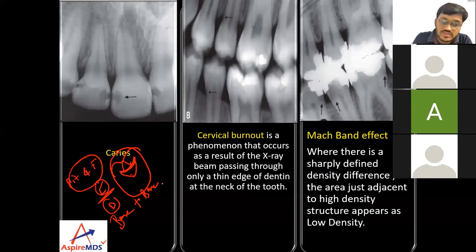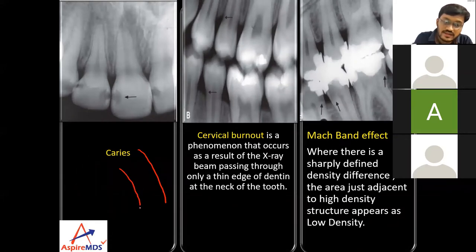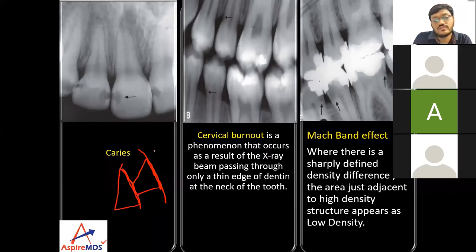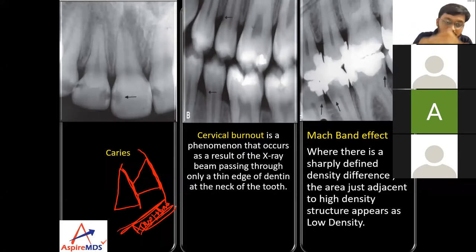When we talk about smooth surface caries, in enamel it starts as a broader region which reaches the DEJ, then again it spreads and goes narrower. So here the relationship is apex to base. Let's get back to the radiographic appearances.